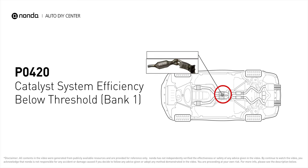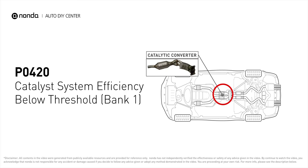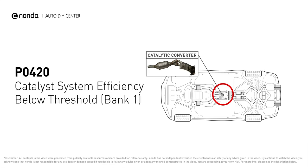P0420 is one of the most common error codes. It means your catalyst system efficiency is below threshold near engine bank 1, which indicates that the catalytic converter is not functioning efficiently, so the vehicle is increasing the output of harmful pollutants.